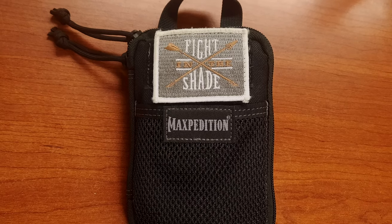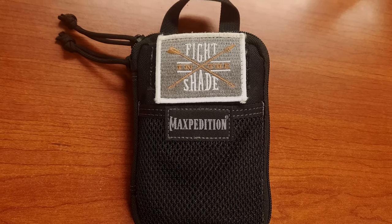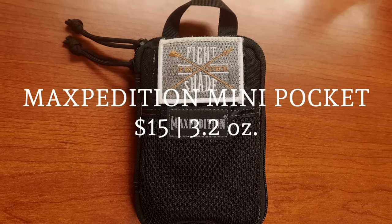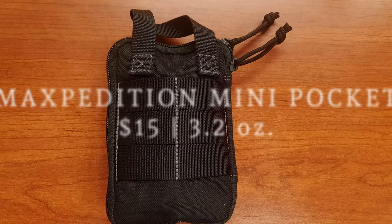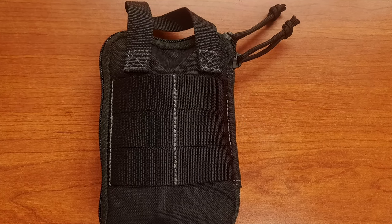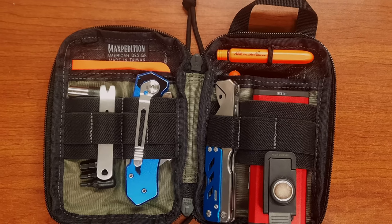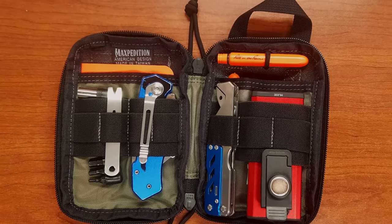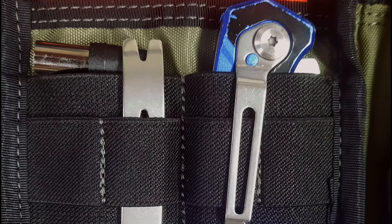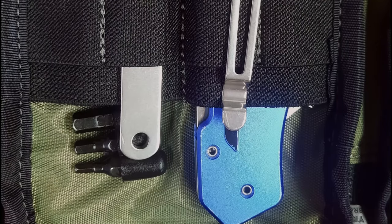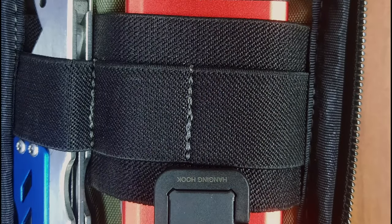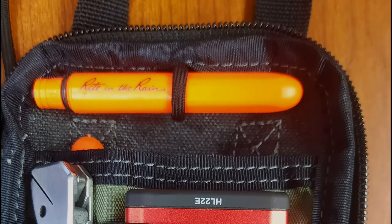Now inside the TomToc sling bag, I keep a Maxpedition Mini Pocket Organizer pouch. This is a 6x4x1 clamshell opening pouch with a main compartment, dual zippers, a couple of slip pockets, a key leash with a clip, some elastic organizers, and a tie-down loop. It is MOLLE compatible, and this is where I keep my EDC tools.